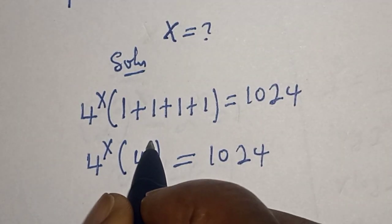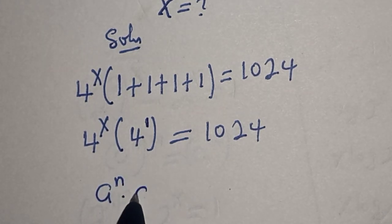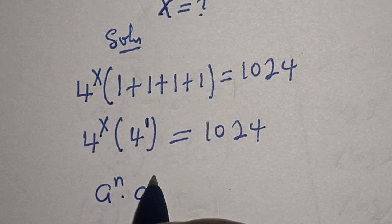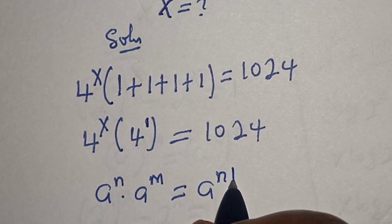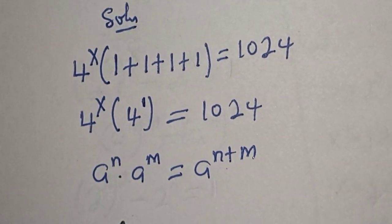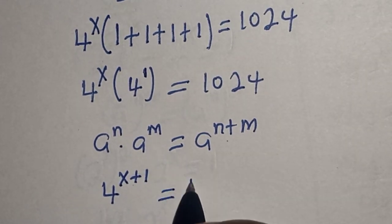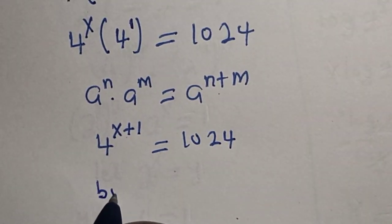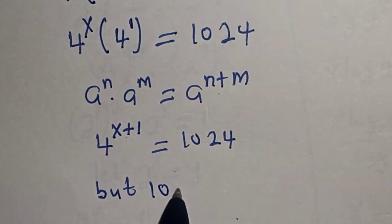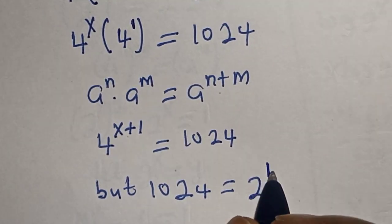Now, since this is 4 to the power of 1, and when you multiply a raised to power n by a raised to power n, this equals a raised to power n plus n. So this becomes 4 to the power of s plus 1, which is equal to 1024. But 1024 is equal to 2 to the power of 10.